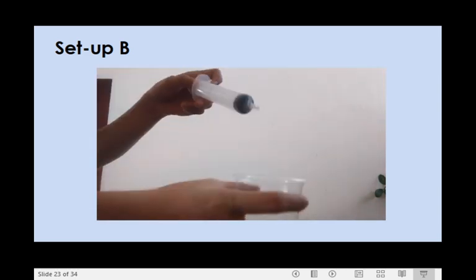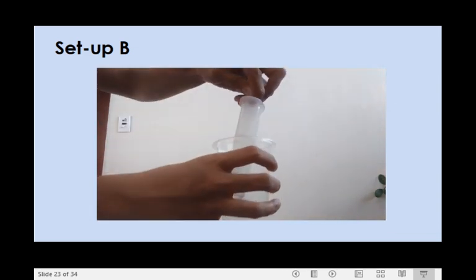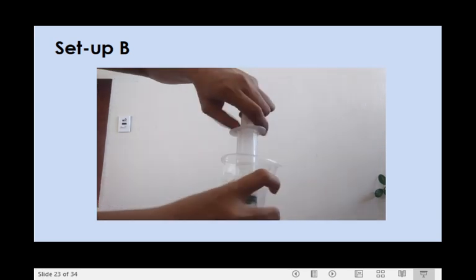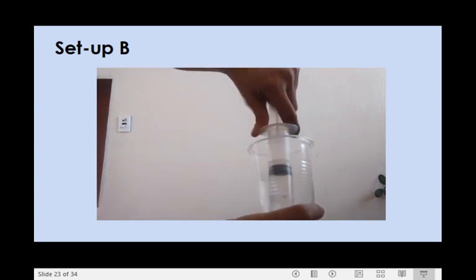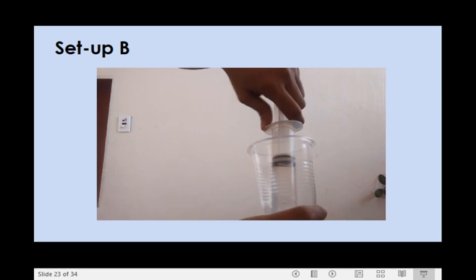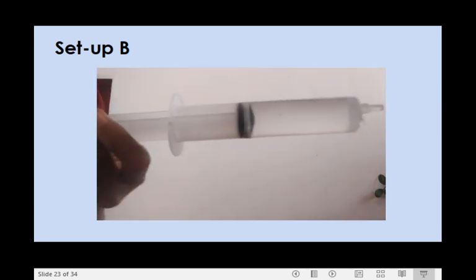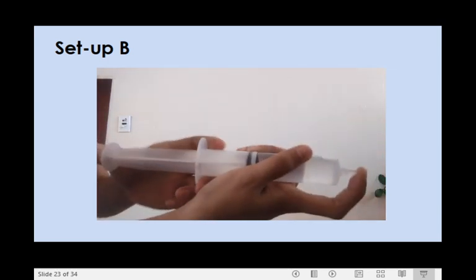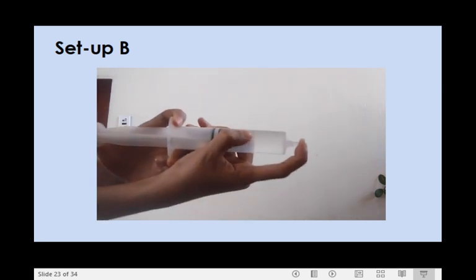For setup B, suck water from the cup or container up to 30 ml level of the syringe. Cover tightly the tip of the syringe with your finger and use your other thumb to push the plunger.